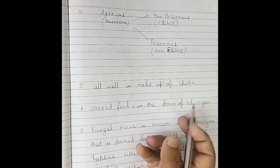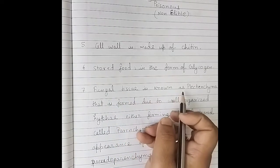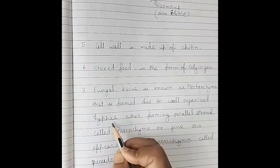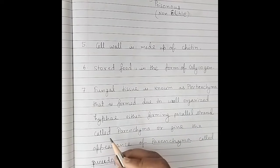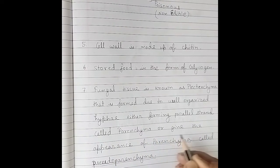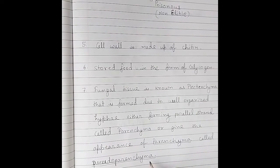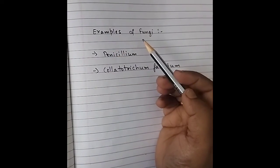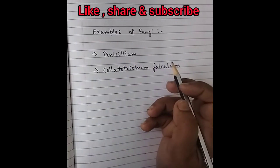Stored food in fungi is in the form of glycogen. Fungal tissue is known as plectenchyma, which is formed due to well-organized hyphae either forming parallel strands called prosenchyma, or giving the appearance of parenchyma that is not true parenchyma, also called pseudo parenchyma — pseudo means false. Examples of fungi include Penicillium and Colletotrichum falcatum.